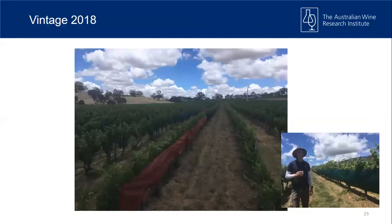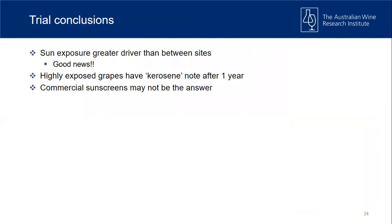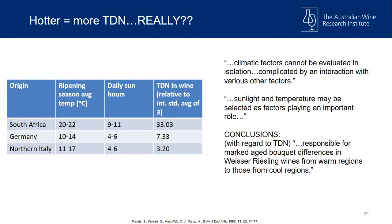From those trials: sun exposure is a bigger driver than the temperature difference between sites — great news for a warming climate, because if temperature isn't the biggest driver, we can actually do things with canopy architecture and change light interception to change TDN. Highly exposed grapes show kerosene after a year — a sensory panel can definitely pick it up after two years — which is what we're trying to avoid. Commercial sunscreens didn't show much promise in this space.